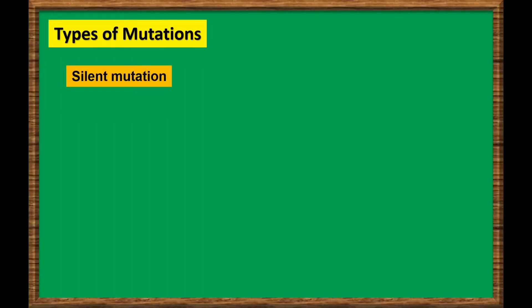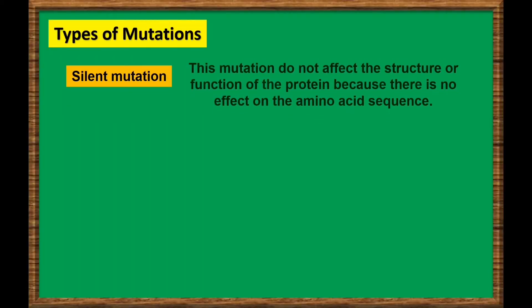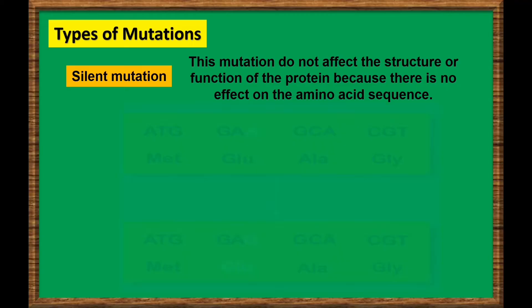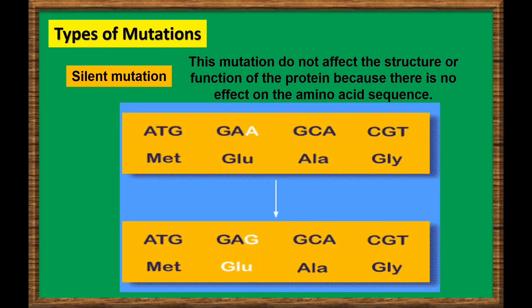Some mutations that change DNA bases do not have any effect on the sequence of amino acids in the protein. These mutations are called silent mutations and they do not affect the structure or function of the protein because there is no effect on the amino acid sequence. For example, the nucleotide adenine was replaced by guanine, but still the amino acid is glutamic acid.